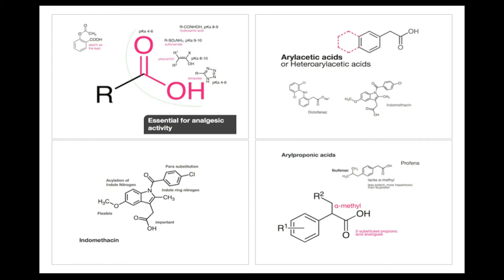They were playing around structurally. What they found is that this particular structure — again, you see the acid there recurring — with a methyl group, an OH group, and an oxygen here, was more potent than aspirin. But if they added another ring to mimic the arachidonic acid, it loses the potency. So it doesn't work with that added structure.